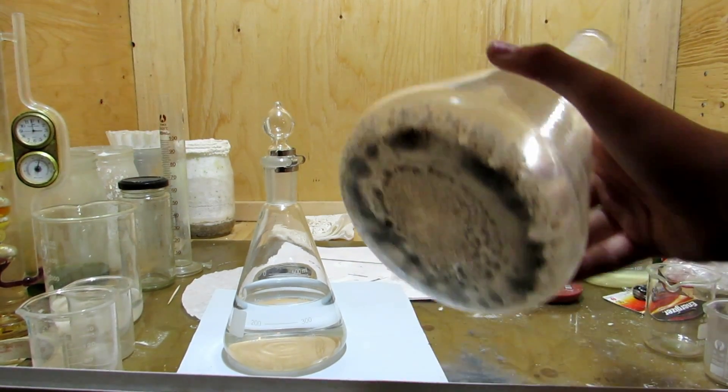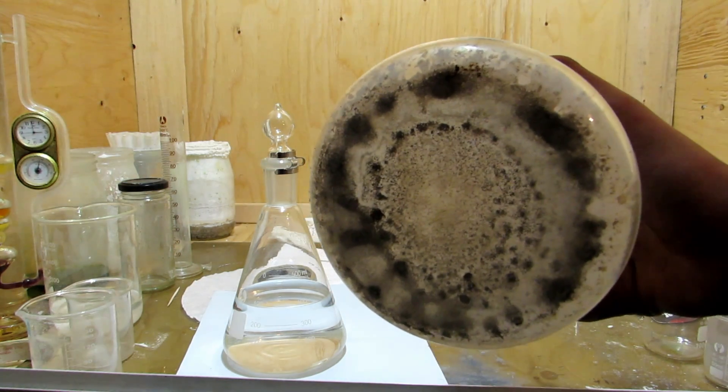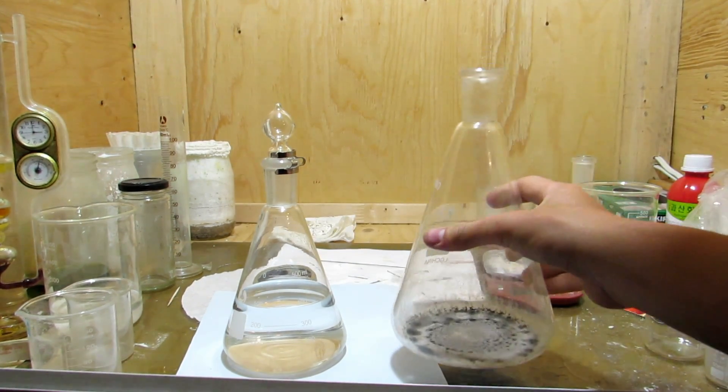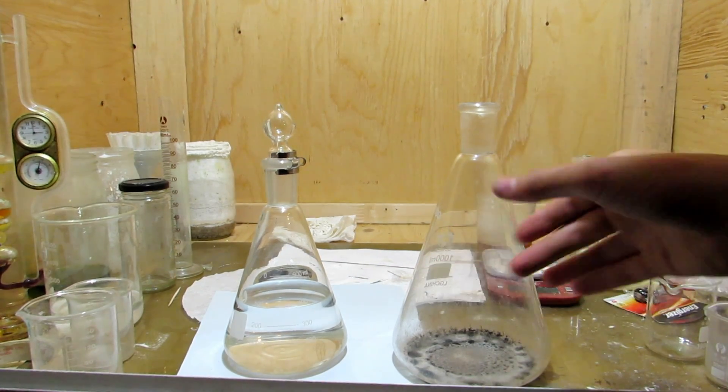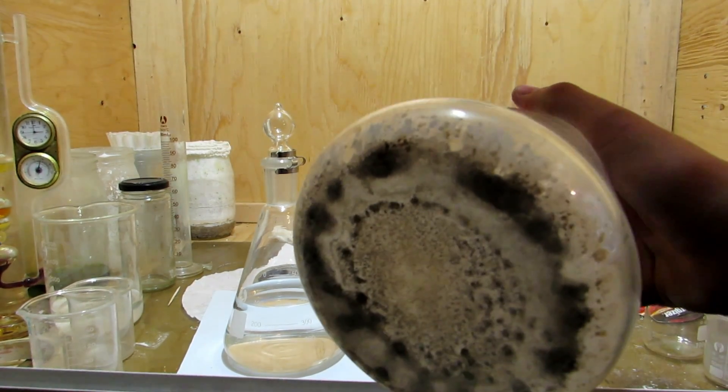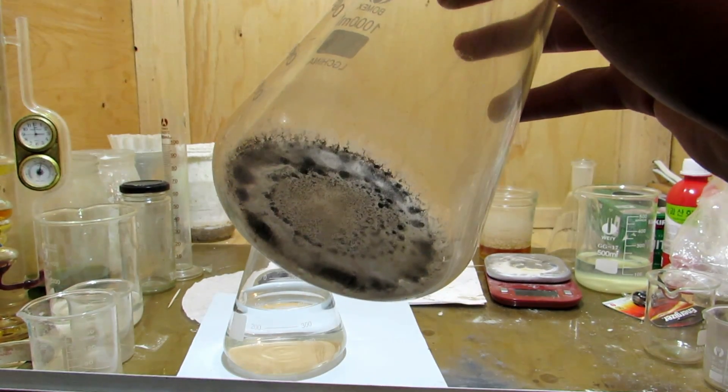And now in our other flask here, we can see the potassium hydroxide. Now this also has some black gunk, probably carbon, because interestingly enough, the remainder of the impurities actually dissolved into the ethanol, and thus when we distilled it off, they decomposed on the bottom here, along with all of our potassium hydroxide.